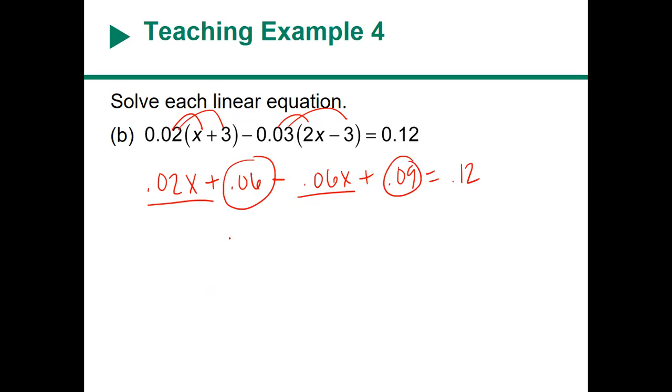Doing that, I have 0.15 minus 0.04x equals 0.12. Now I'm going to isolate the variable. To start with isolation, think about it as you're trying to break into a bank vault. You're not gonna go straight to the vault, you gotta get through the security then you gotta try to get in the vault. Okay, so I'm going to subtract, and I have negative 0.04x equals negative 0.03.